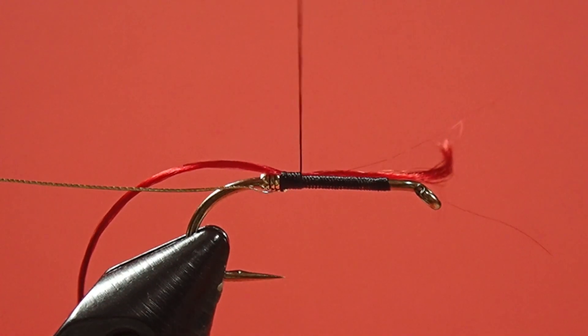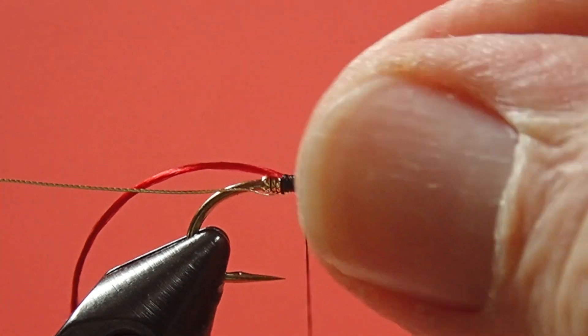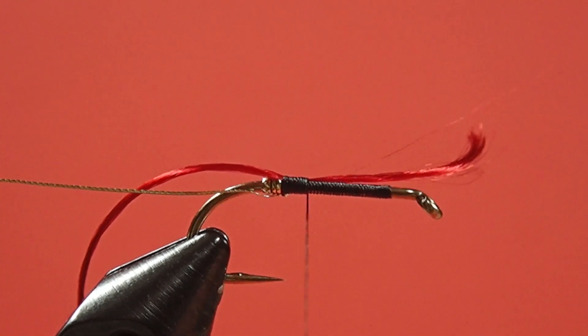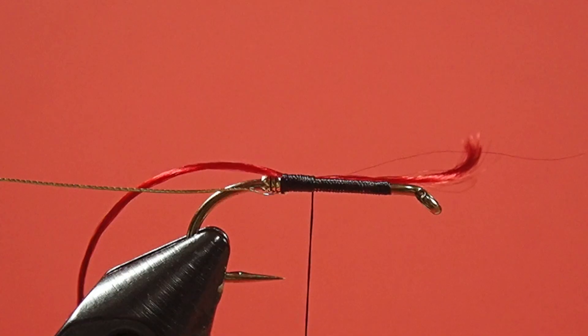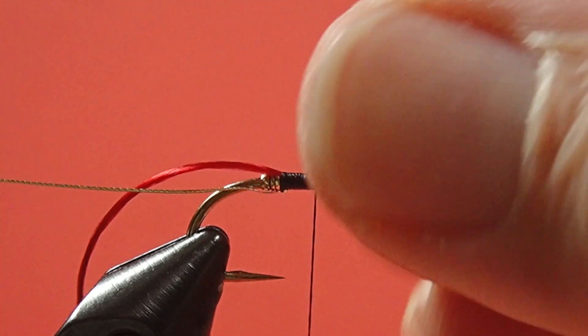Now just leave that on top. And what we can do is we can use the tag to help fill up the space. If we wanted to, we could have left the tinsel tag in there as well. Just keep it on top.